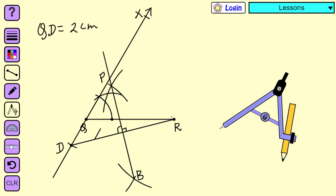We will join point P and R. Triangle PQR is our required triangle.